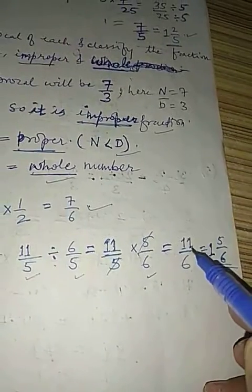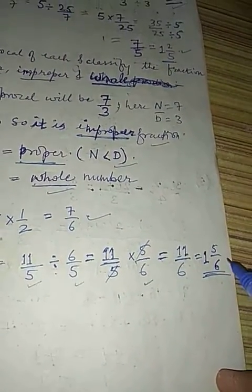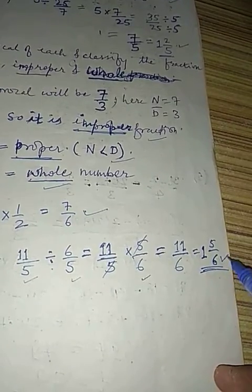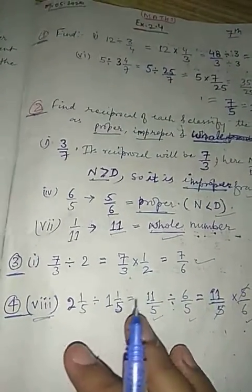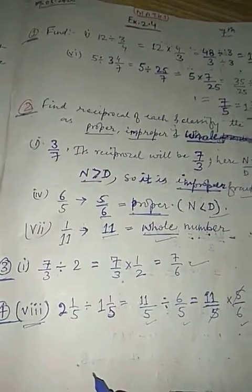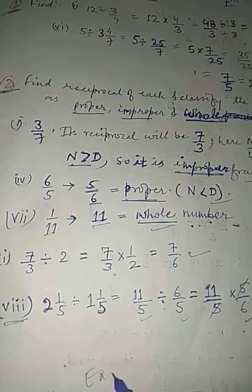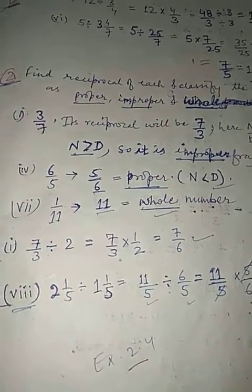You will get 11 upon 6, which you can simplify to mixed fraction: 1 whole 5 upon 6. So in the same way you can solve this exercise, dear students. Your homework is exercise 2.4. That's all for today, thank you.